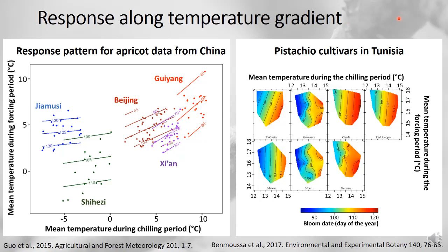The extreme warm end of the gradient would be where winters get really warm. This is why we started working in Tunisia, which has some of the warmest winters among any locations growing deciduous fruit trees. For pistachios in Tunisia, the contour lines are nearly vertical — pretty much as we predicted — meaning that spring phase timing here is driven almost exclusively by how cold the winters are. With winters getting warmer, bloom occurs later rather than earlier.